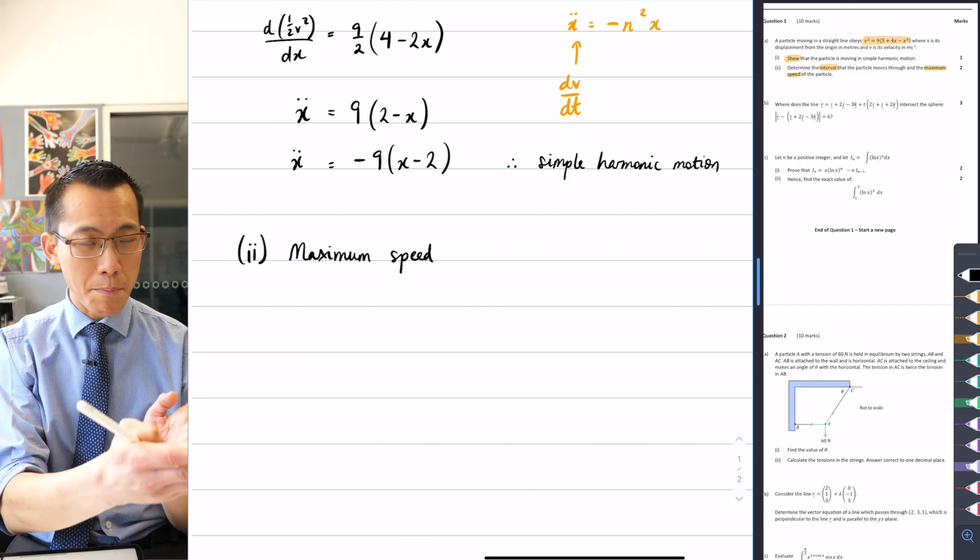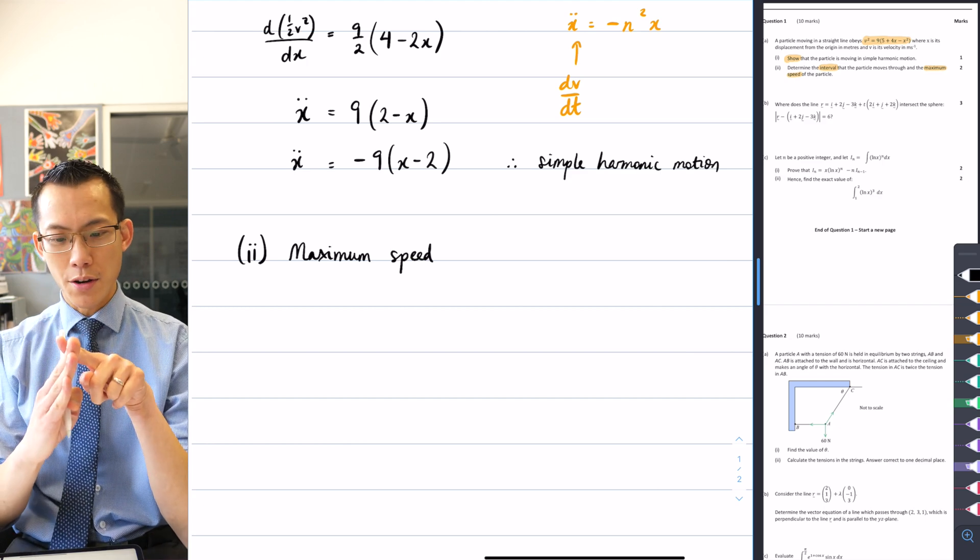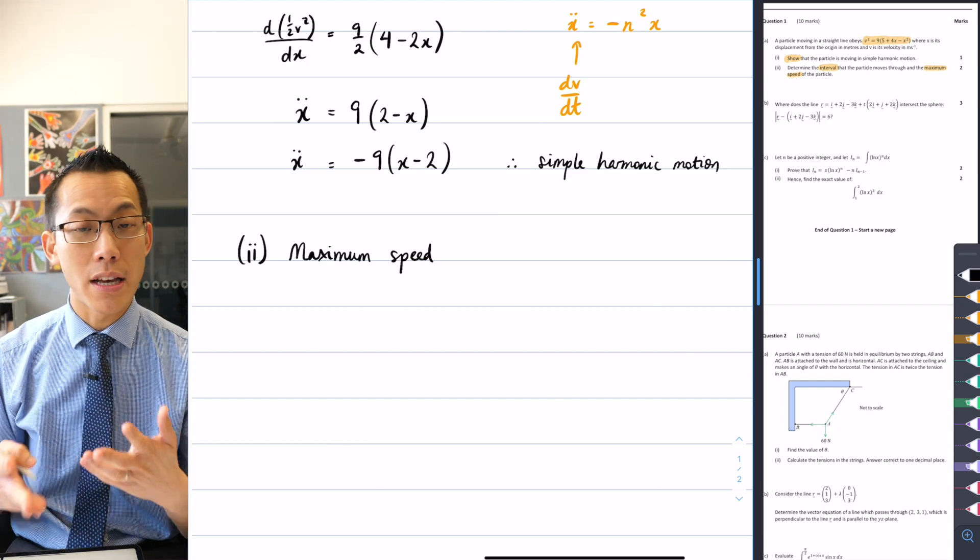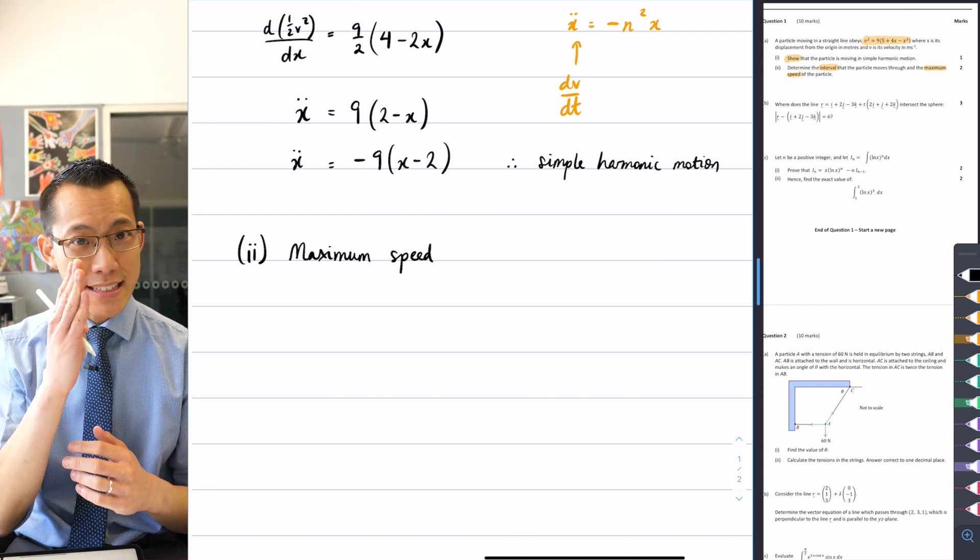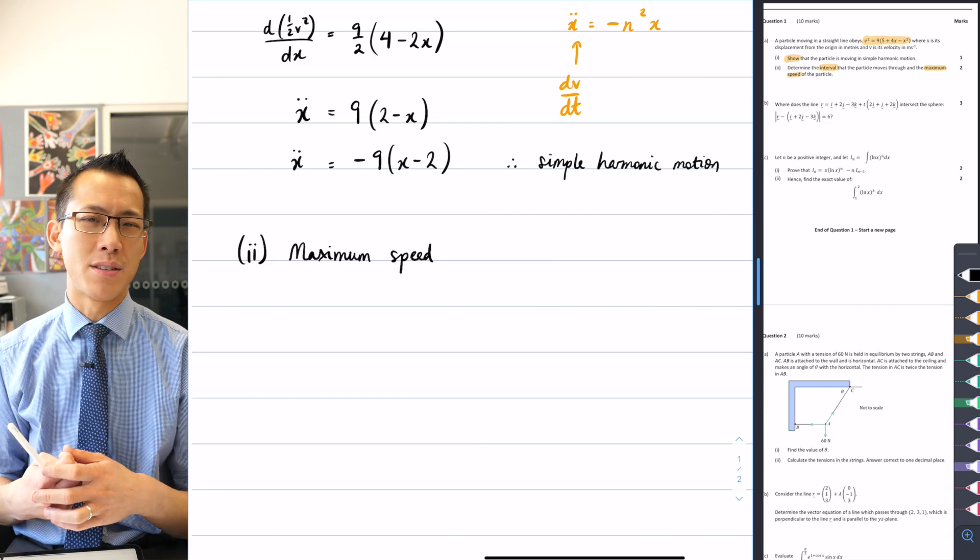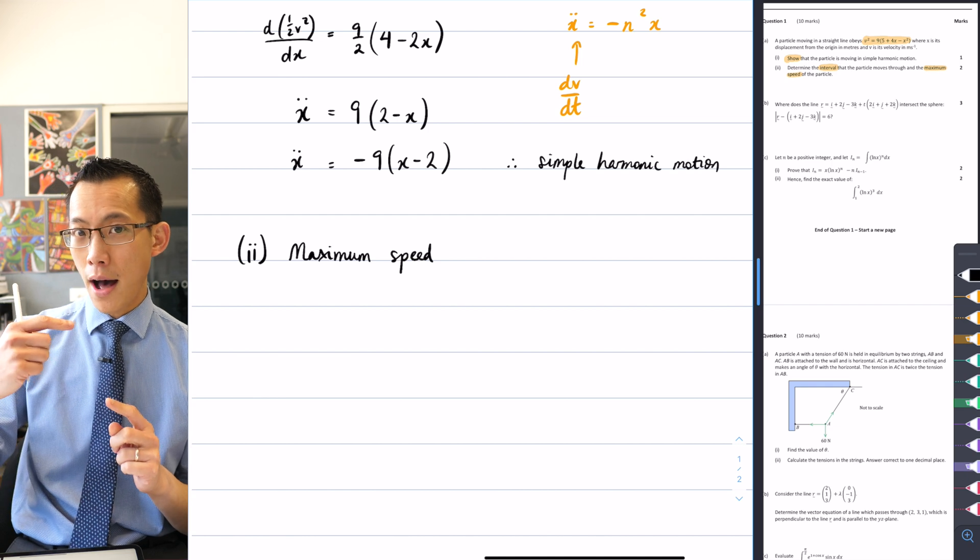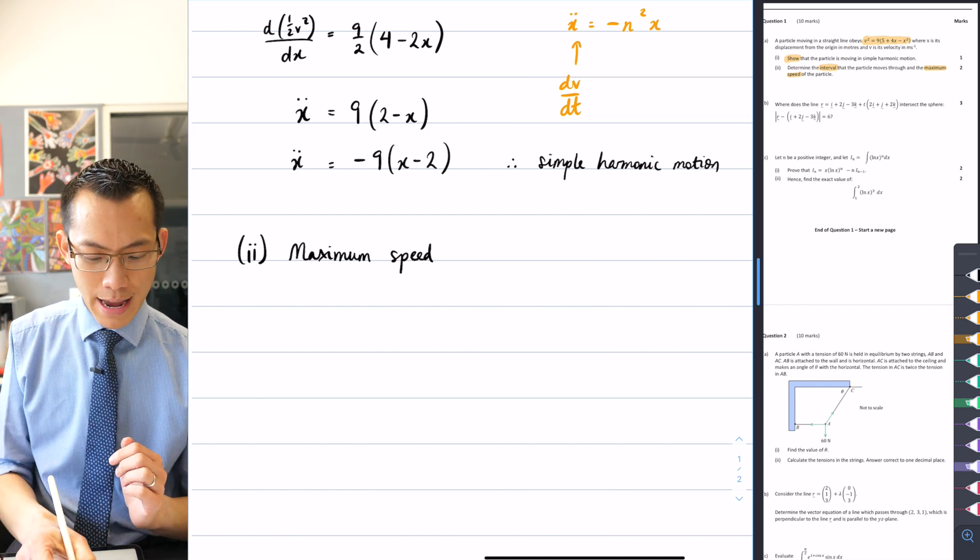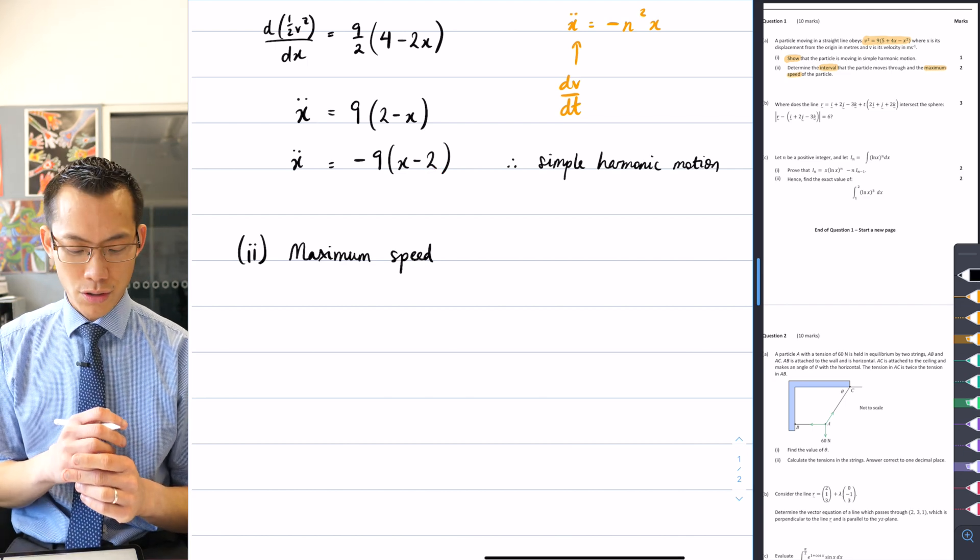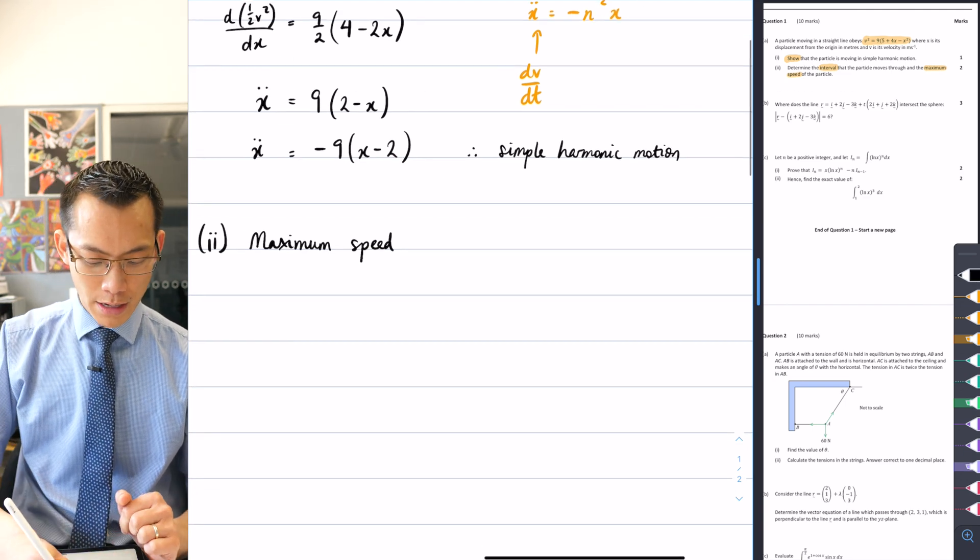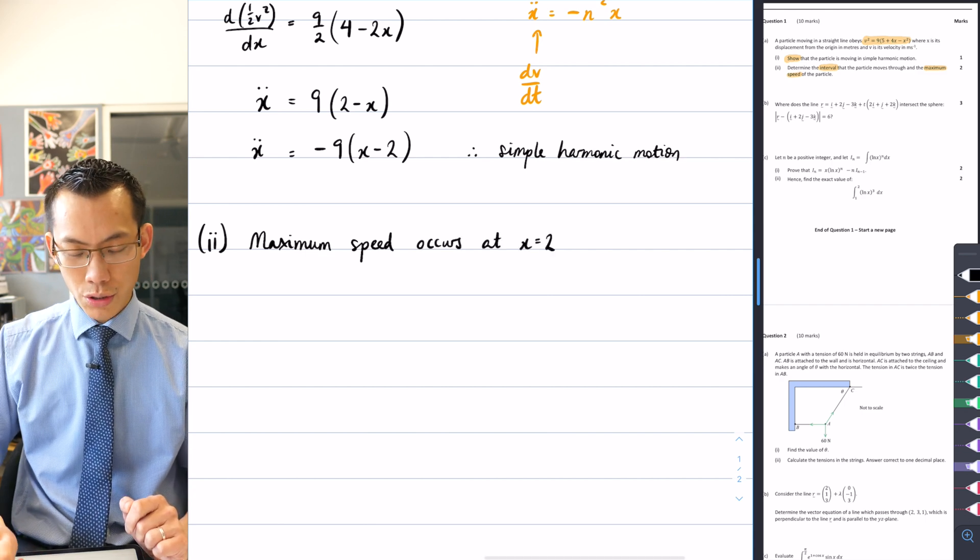Because you've been accelerated back toward the center of motion and then as you pass the center of motion, you are experiencing no acceleration. You're not speeding up, you're not slowing down, you can't get any faster than that and at that exact moment you're not being slowed down. So that's where maximum speed occurs, in the center of motion. But from part one, I know where the center of motion is, it's at x equals 2 because that's what shift has been introduced. So I can say maximum speed occurs at the center of motion, which is x equals 2.